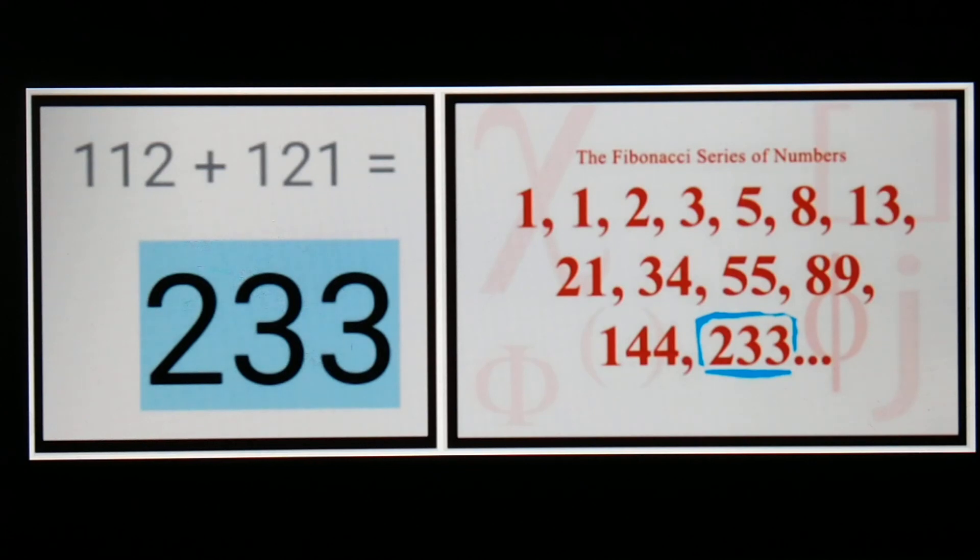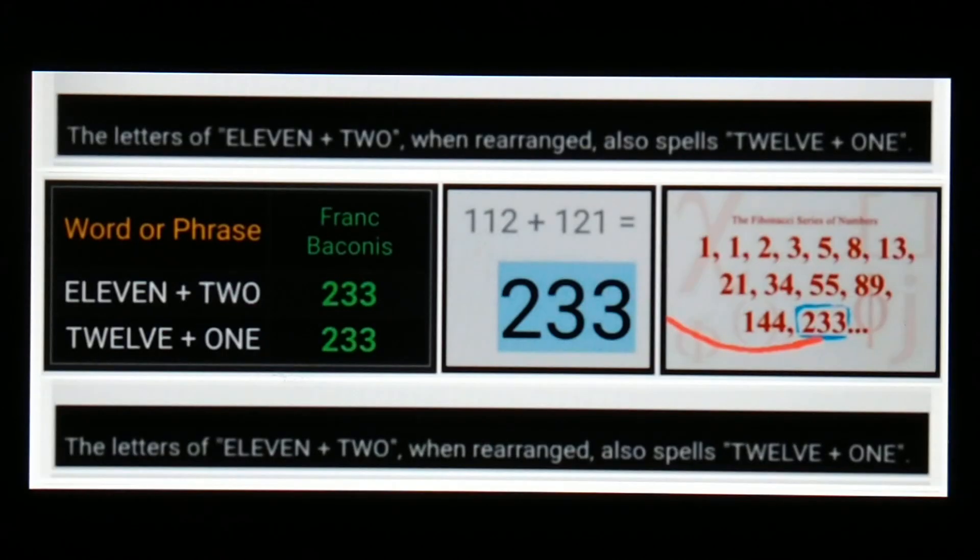Of course we can get that 233—remember we added 112 plus 121. 112 is like the 11 and 2, and 121 is like the 12 and 1. Add those together: 233. And if we use the Frank Boconis Gematria cipher in all caps, "11 2" equals 233, just like the words "12 1".